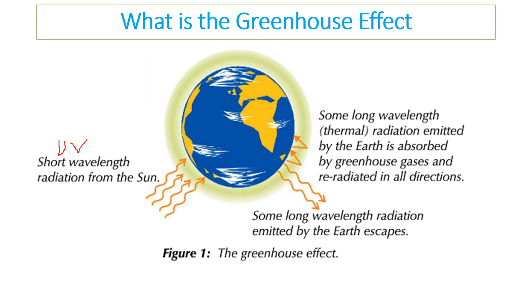What greenhouse gases do is allow UV radiation from the Sun to come in. That radiation is absorbed by the Earth and then re-emitted as longer-wave infrared radiation. That infrared radiation is not able to fully escape the planet because the greenhouse gases absorb it and prevent it from escaping. This is why our climate is warming. We need some greenhouse gases — without them life on Earth could not have developed — but when greenhouse gas levels are very high, more and more infrared radiation gets trapped.